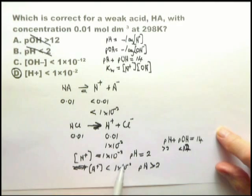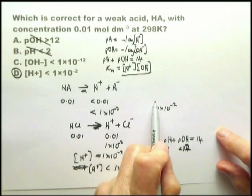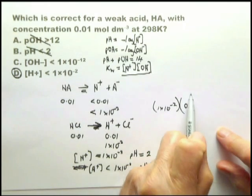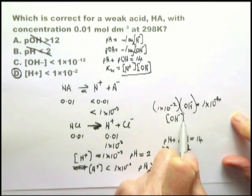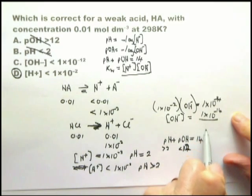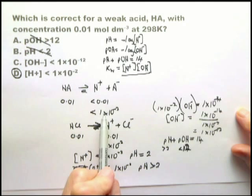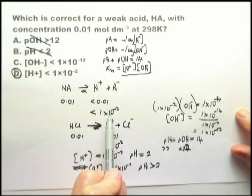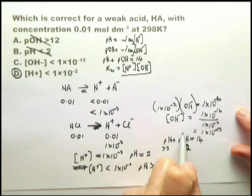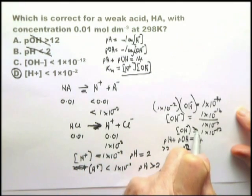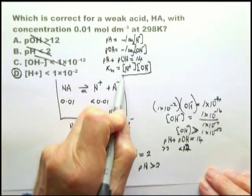Now let's look at the hydroxide ion. We have the hydrogen ion concentration of 1 times 10 to the minus 2. We multiply that by OH minus, and we know that Kw equals 1 times 10 to the minus 14. Therefore, OH minus equals 1 times 10 to the minus 14 over 1 times 10 to the minus 2, which equals 1 times 10 to the minus 12. If the hydrogen ion concentration is less than 1 times 10 to the minus 2, then the OH minus must be greater than 1 times 10 to the minus 12. So the option saying OH minus less than 1 times 10 to the minus 12 is wrong.